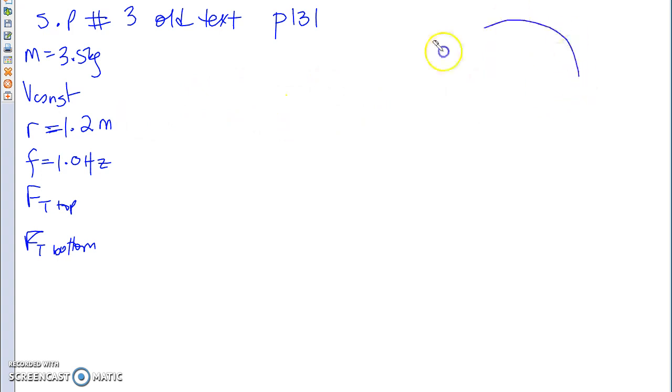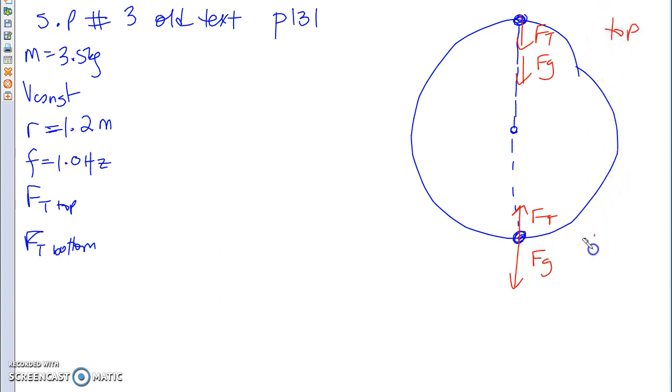Okay, so we said that if my object is being twirled or swung in this vertical plane, I have these are my two locations: top and bottom. My FBD is going to be like so. So your tension, of course, is against your centrifugal force and your gravity, going in the same direction at the top. And at the bottom, tension against your centrifugal force, which is pushing outward, and gravity.